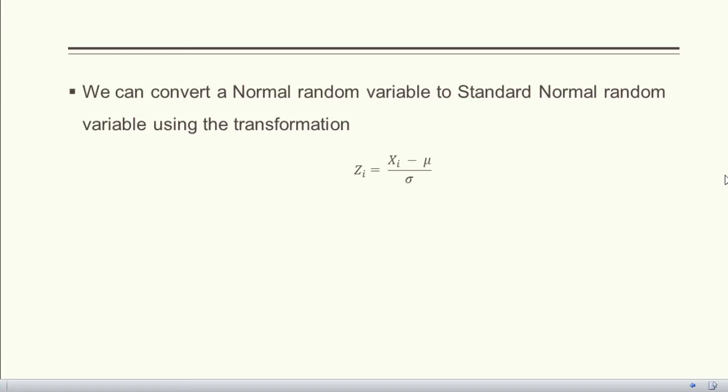We can convert any normal random variable to a standard normal random variable if we know its arithmetic mean and standard deviation. A given value xi can be converted using the transformation: zi = (xi − μ) / σ. The z-score is positive if the data value lies above the mean and negative if the data value lies below the mean.